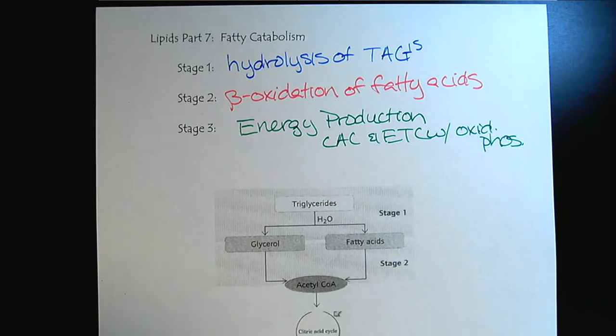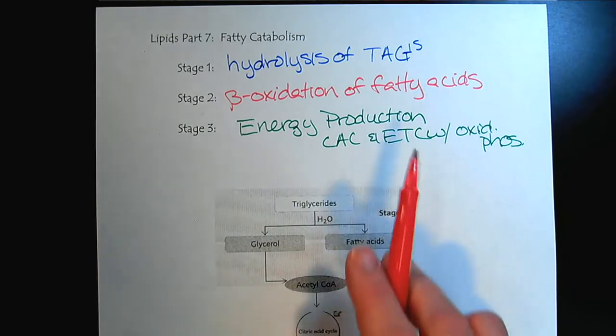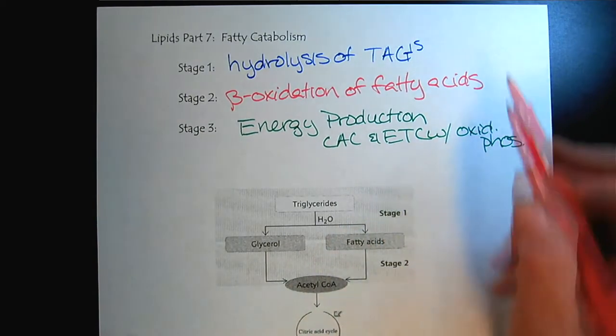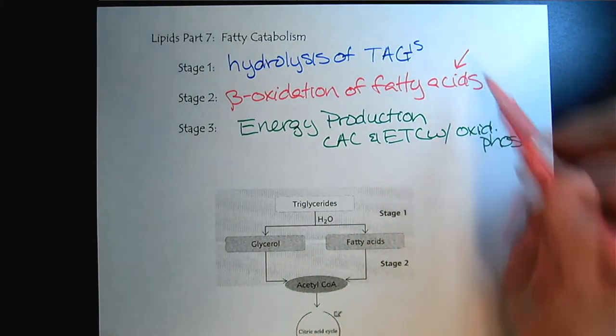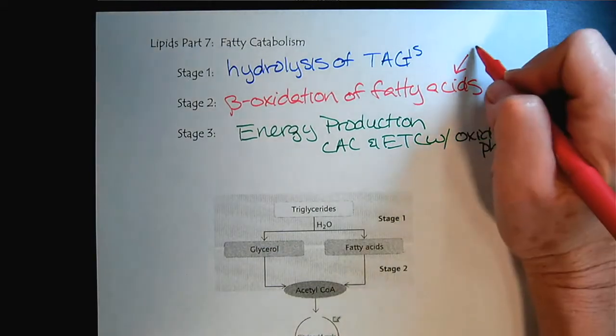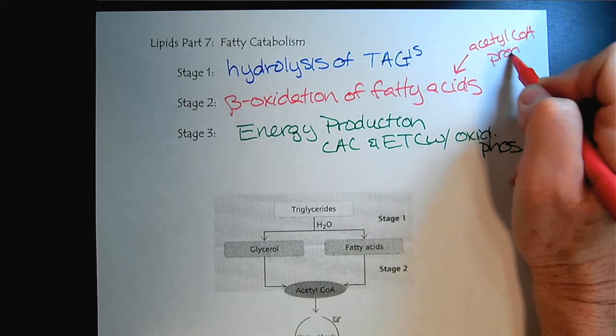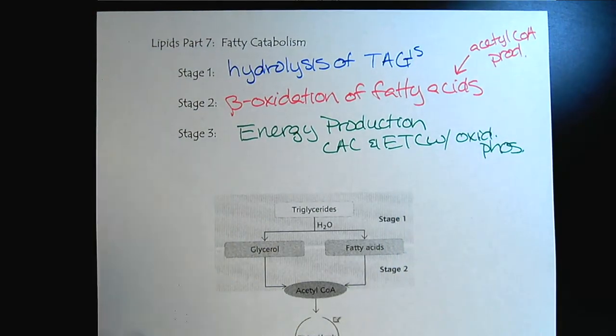With those other biomolecules, we said stage 2 was acetyl-CoA production. Well, what we'll find in this video is the beta-oxidation of fatty acids is the acetyl-CoA production. So we'll explore that later in the tutorial.